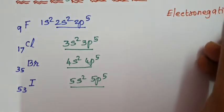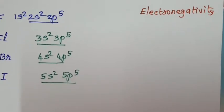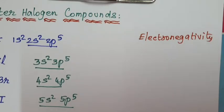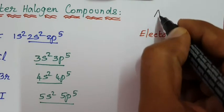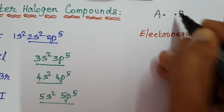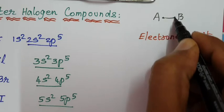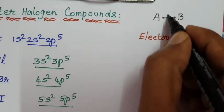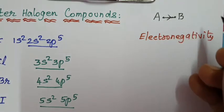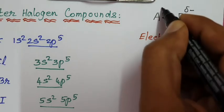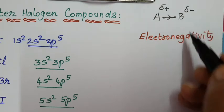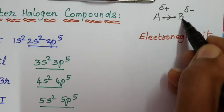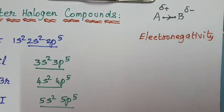Electronegativity depends only on covalent molecules. A covalent molecule is formed by sharing of electrons — atom A shares one electron and atom B also shares one electron. After formation of the covalent bond, one atom pulls the shared pair of electrons towards itself. Electronegativity is defined as the tendency of an atom to pull the shared pair of electrons towards itself.